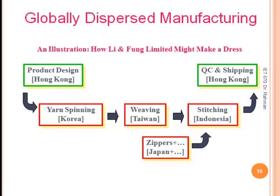Another example of a supply chain involves several countries — Hong Kong, Korea, Taiwan, Japan, and Indonesia — all involved in making dresses. This illustrates the dimension and global integration required in modern supply chain management.